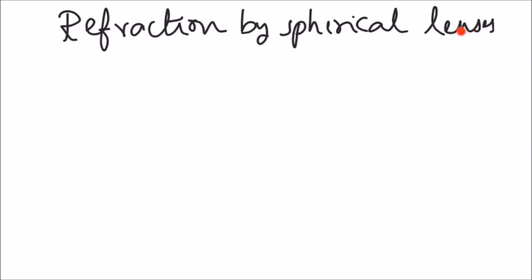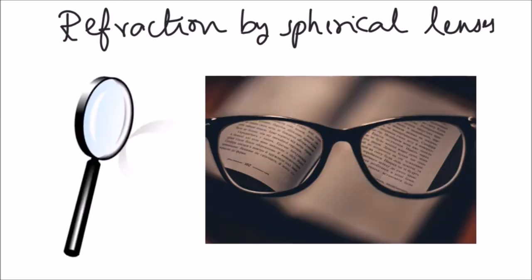A lens is a transparent material bound by two surfaces of which one or both surfaces are spherical. Can you think of any everyday example of a lens? The spectacles that we see and a magnifying glass are all made up of lenses.